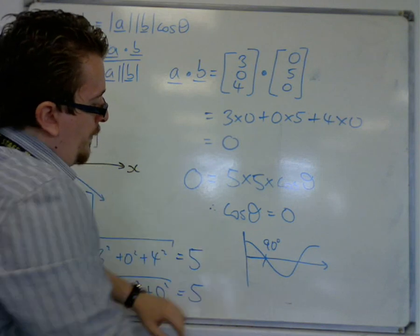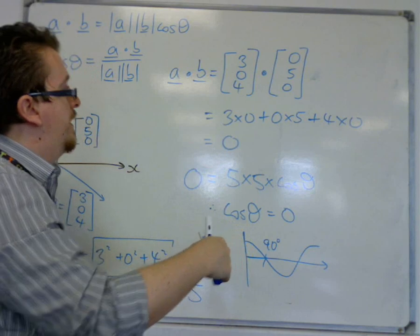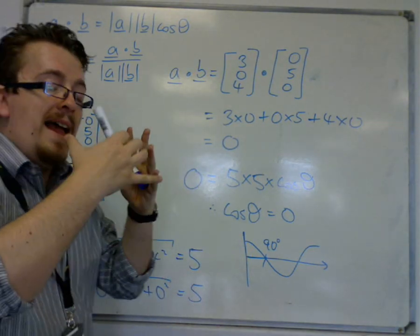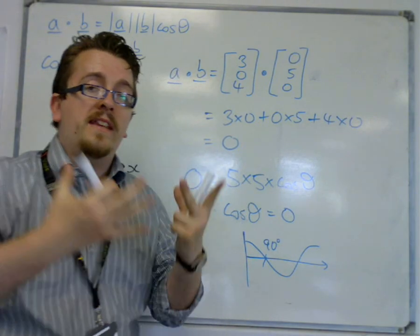So it crosses at 90 degrees, so it is 0 at 90. So that must mean that the angle between the two vectors is 90 degrees.